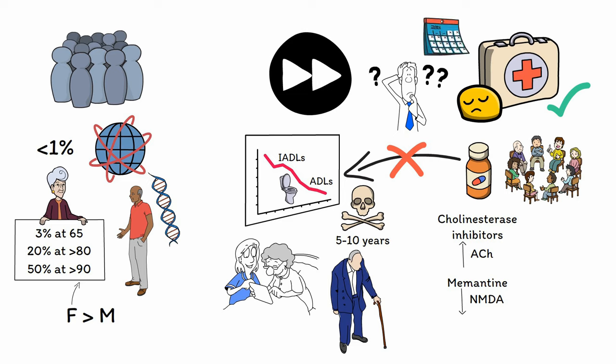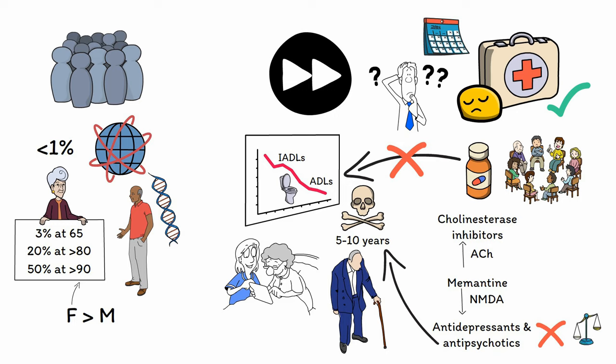In real-world settings, it's not uncommon for antidepressants and antipsychotics to be used for treating Alzheimer's disease, especially in cases where there are pronounced mood or behavioral features. However, the effect of these medications tends to be minimal and, in the case of antipsychotics, may even be associated with an increased risk of mortality in this patient population. They should only be used after carefully weighing the possible benefits against the known risks and considering the overall goals of the patient's care.